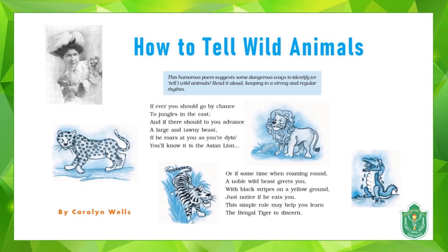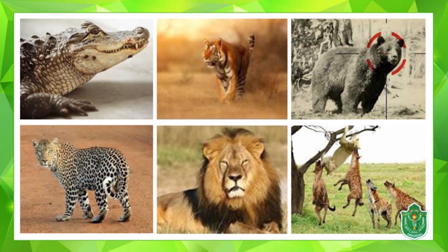All of us are not equally familiar with different kinds of wild animals, so for an inexperienced person it's important to know the ways of distinguishing between them. There are different kinds of wild animals you must have seen on your TV screens — a crocodile, a leopard, a tiger, lion, hyenas, and a bear displayed in the picture. We'll come to know why once we explain the poem.